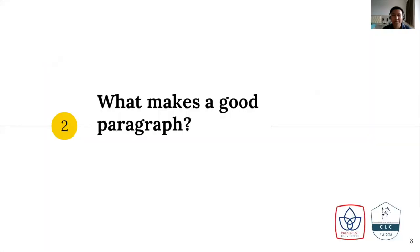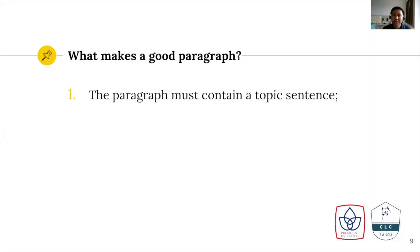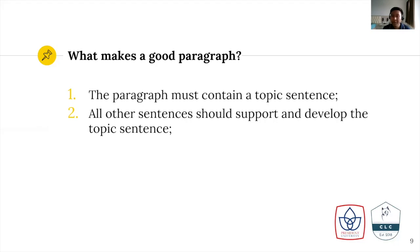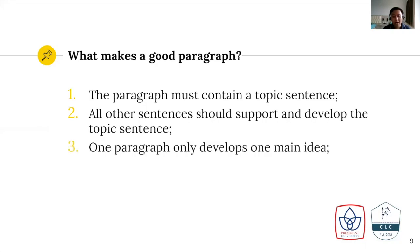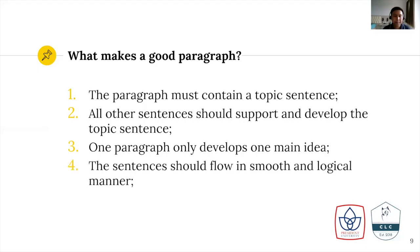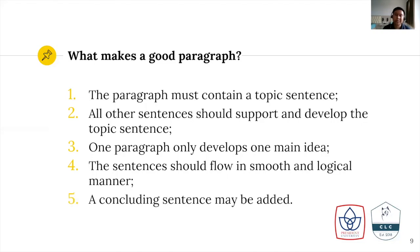So what makes a good paragraph? There are several principles that you need to understand. First of all, the paragraph must contain a topic sentence — I will talk about a topic sentence further after this. All other sentences after the topic sentence should support and develop that topic sentence as well. Third, one paragraph only develops one main idea. So it contains one topic sentence and that topic sentence only develops one main idea. If you think you have more than one main idea, then you can separate it into separate paragraphs. The sentences should flow in a smooth and logical manner, and last but not least, you need to include a concluding sentence as well, though this is optional.